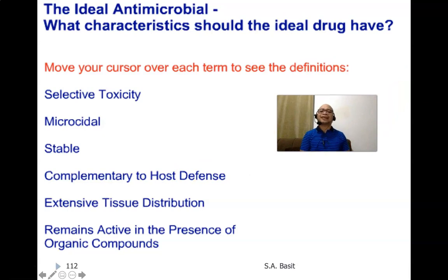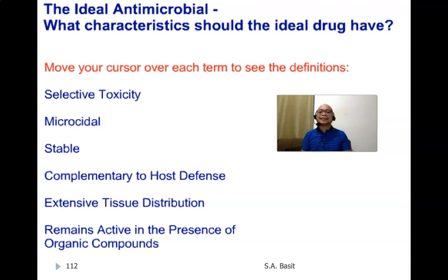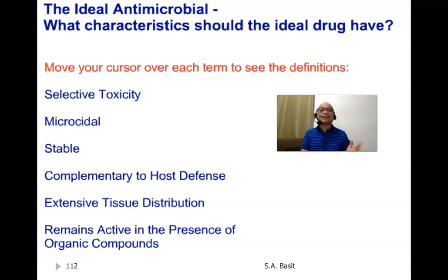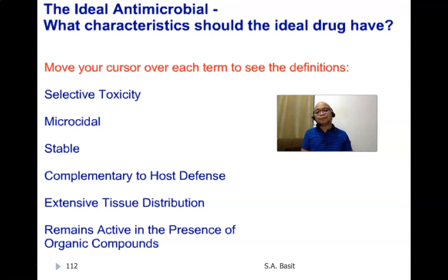What characteristics should the ideal drug have? First, selective toxicity: the active compound should be effective for the pathogen but not for the host cells. It should be microbicidal rather than bacteriostatic. It should be stable even in the presence of organic compounds found inside our body. It should be complementary to host defense — antibiotics should never fight with the cells of the immune system. It must have extensive tissue distribution after being taken.